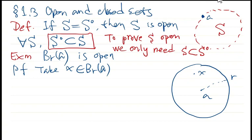So we take an x in this ball. We want to show that x is an interior point of this ball, then the ball is open. So x is in this ball, then the distance of x to a is less than r by the definition of ball.